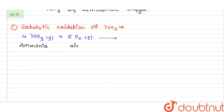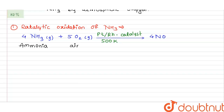This reaction takes place in the presence of a platinum (Pt) catalyst at 500 K. The resultant products are 4 NO — four molecules of nitric oxide in gaseous form.